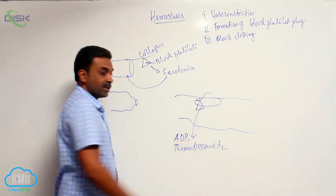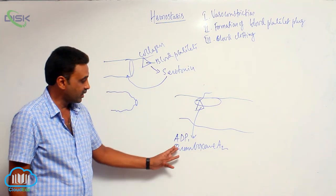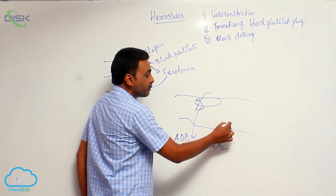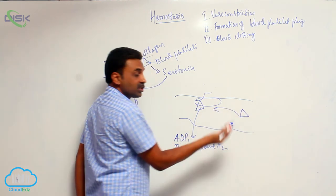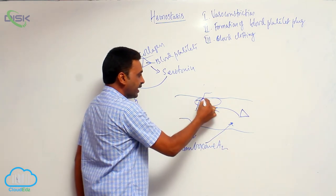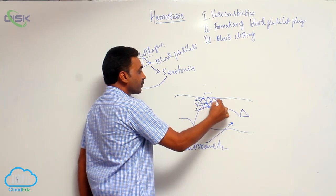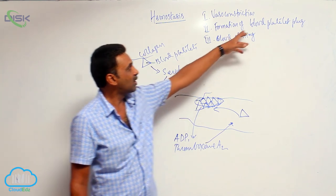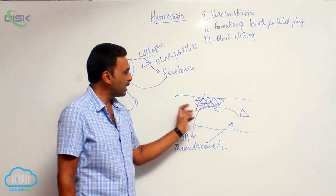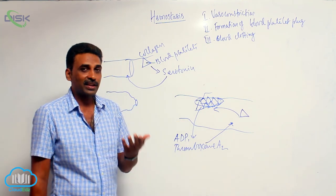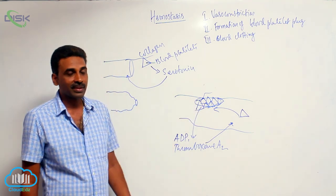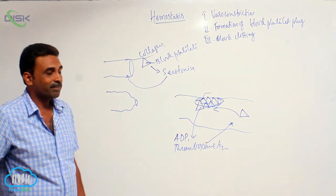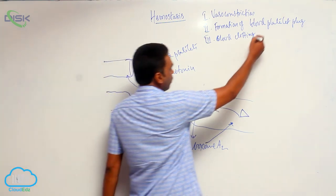Under the influence of these chemicals — adenosine diphosphate and thromboxane A2 — other blood platelets move to the site of injury. They attach with each other and form a plug in that area, called the blood platelet plug. The blood platelet plug directly closes the damaged area. The third mechanism involving hemostasis is blood clotting, also called blood coagulation.